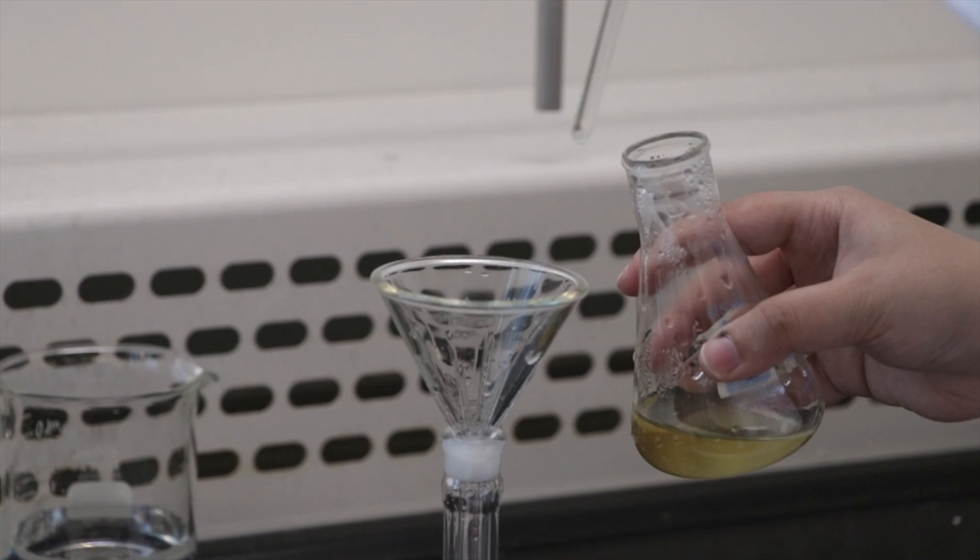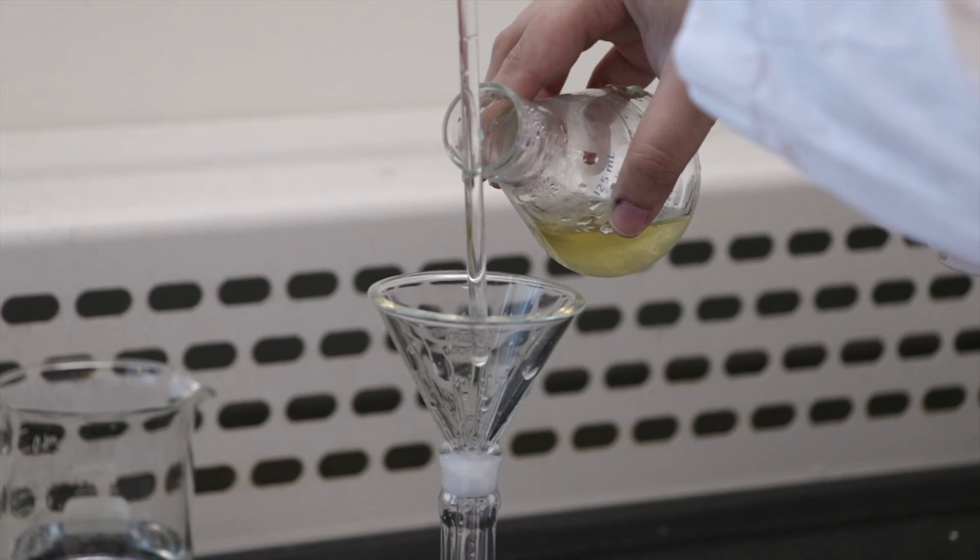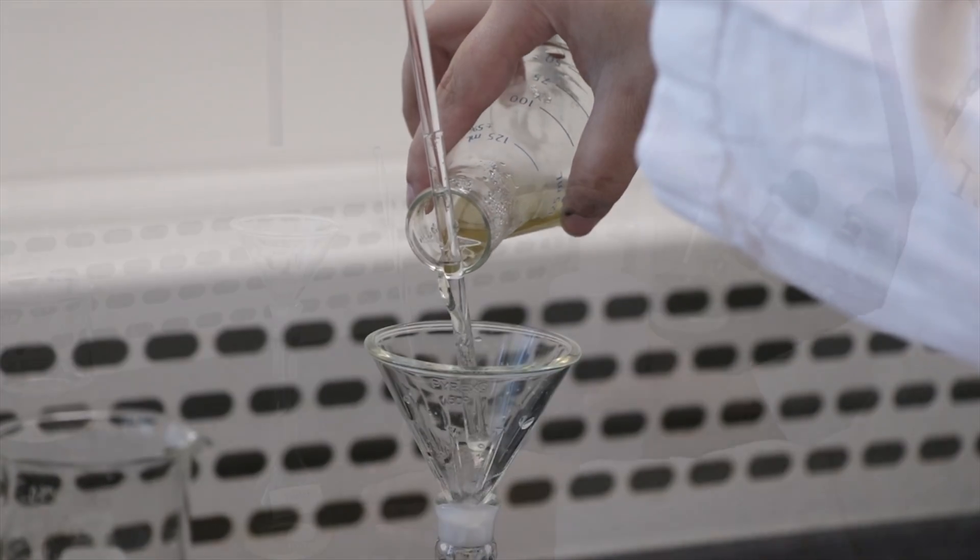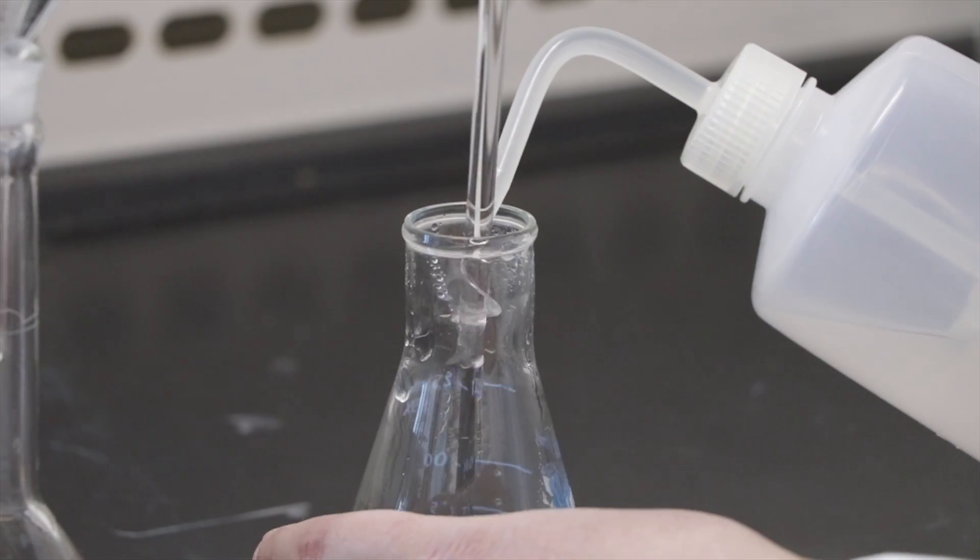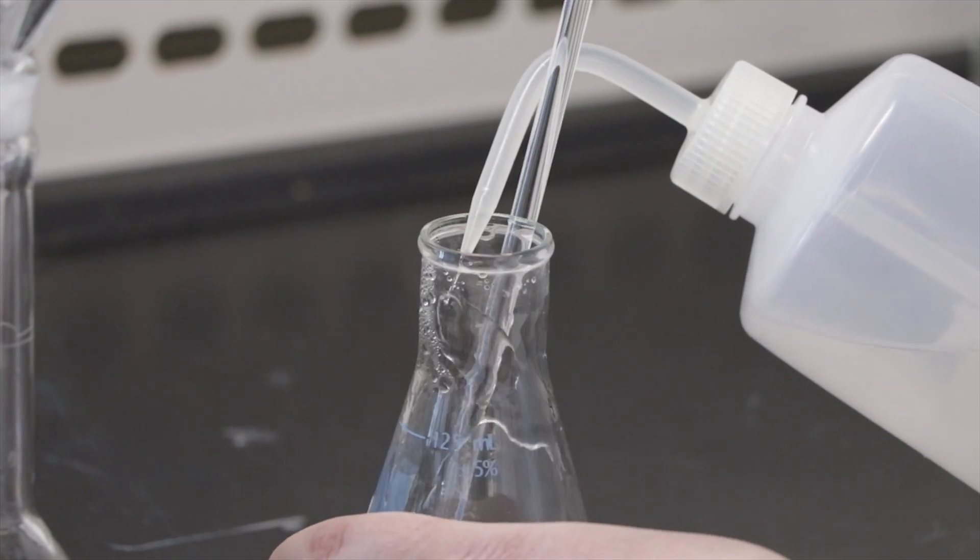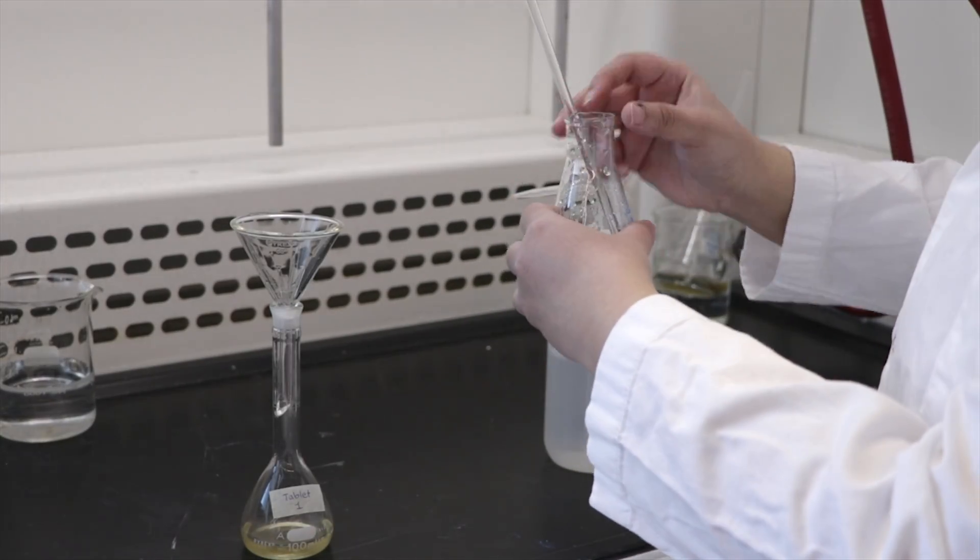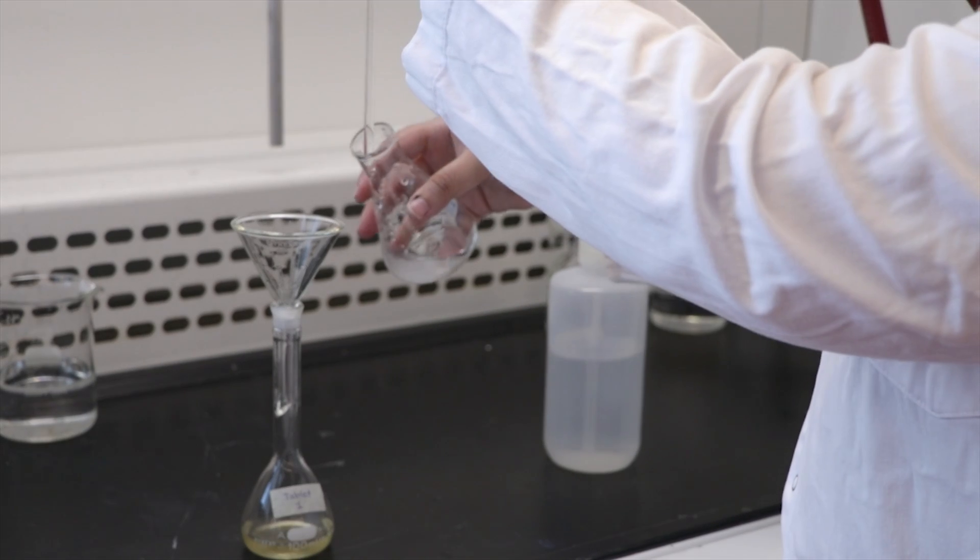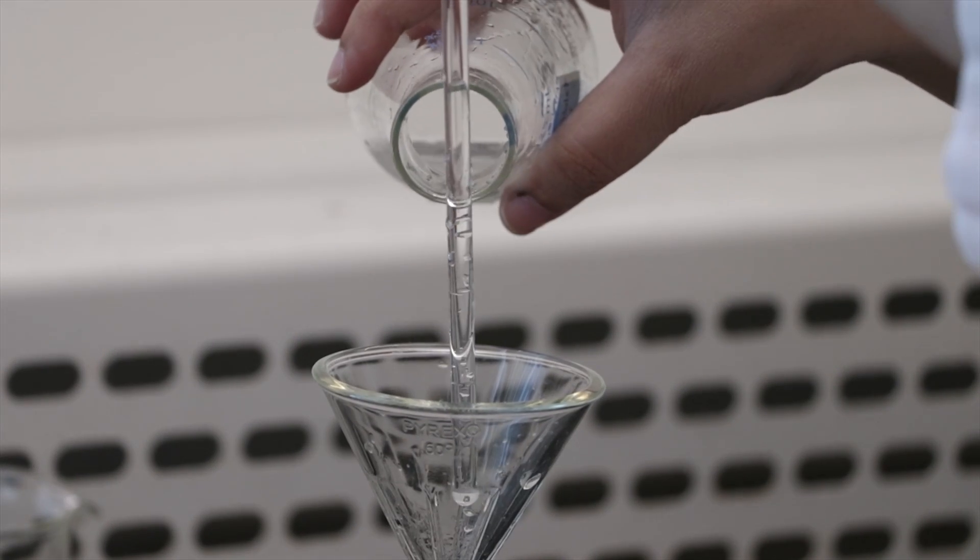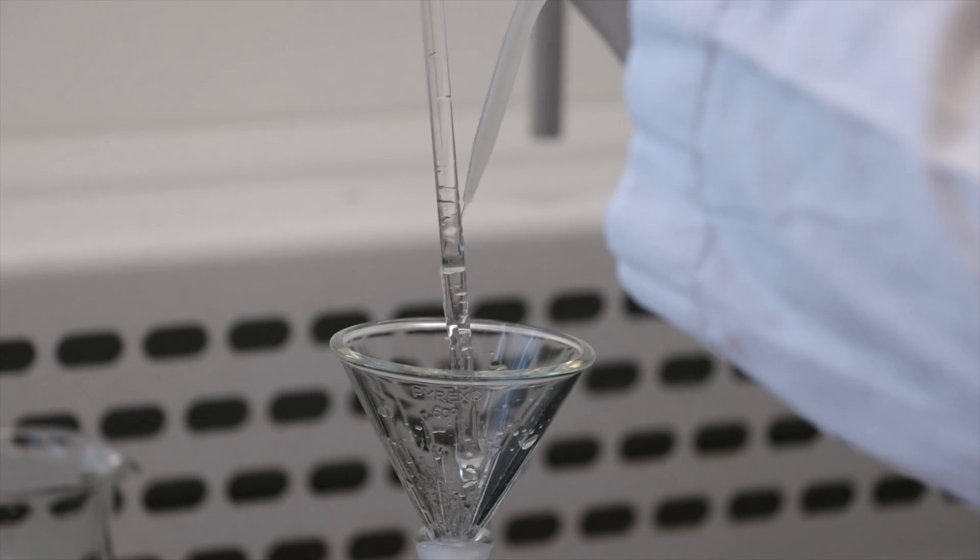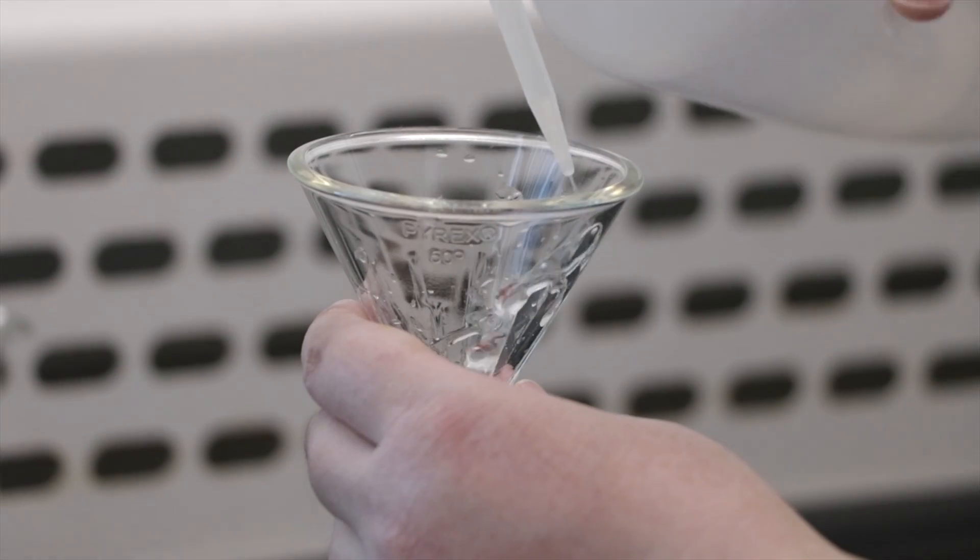Next, quantitatively transfer each solution into a labeled 100 ml volumetric flask. Thoroughly rinse the Erlenmeyer flask to transfer any remaining contents into the volumetric flask. Remember to rinse the glass rod and funnel as well to ensure complete transfer. Use a minimum amount of distilled water for this step as you do not want to go over the 100 ml mark.